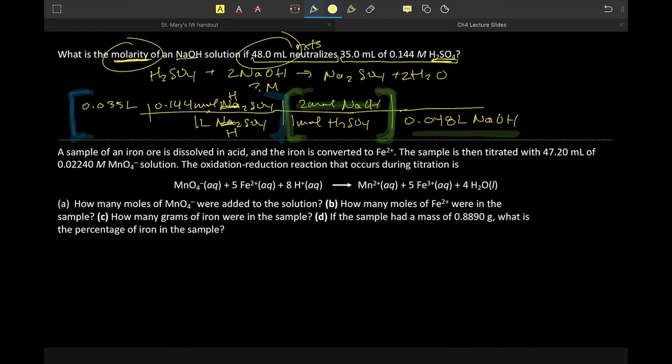Which says that we have a sample of iron ore is dissolved in acid. The iron is converted to Fe2+. The sample is then treated with 47.20 mL of 0.0226 M permanganate solution, and the reaction occurs. And this asks us how many moles of permanganate were added. And so really, that's just this step one that we did up here. And then step two is how many moles of Fe2+. So now we're converting from the known to the unknown. And then step three is how many grams of iron were in the sample.